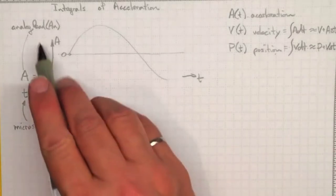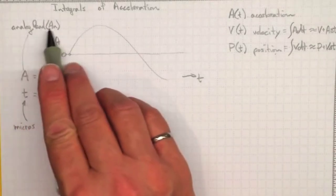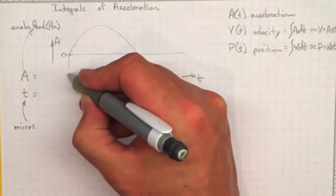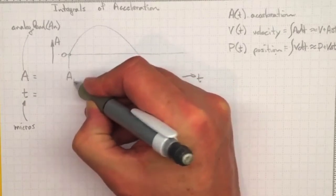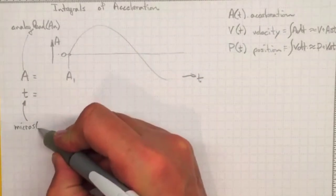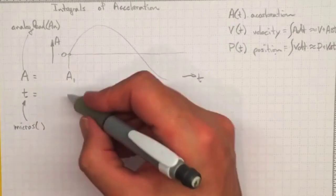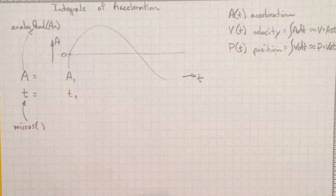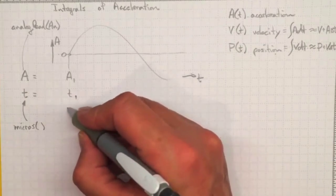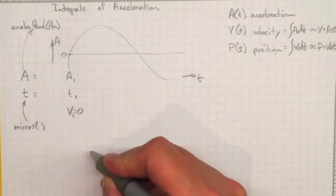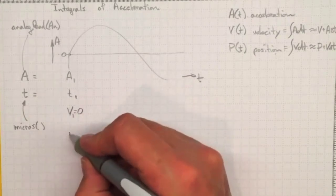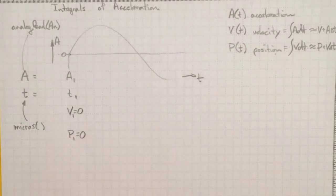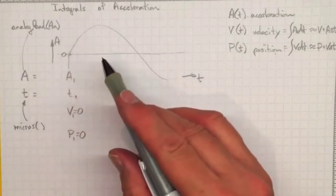So let's try that out. If we can read from our analog input port something, say from an accelerometer that tells us what the acceleration is at this point in time, and we can get from the micros function what the time is in microseconds at that time, and we know because we started out not moving perhaps that v1 equals zero and that p1 equals zero, we knew where we were, then we can integrate that forward in time.